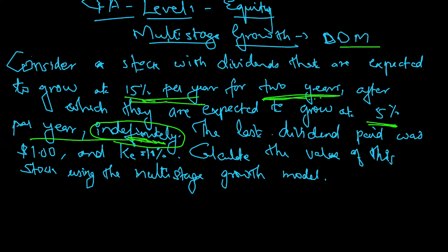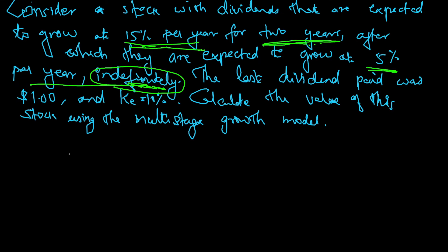When you hear the term 'indefinitely' - constant sustainable growth rate - then we should think about Gordon growth model. The last dividend paid was $1 and cost of equity is 11%. Calculate the value of the stock using multi-stage growth model.